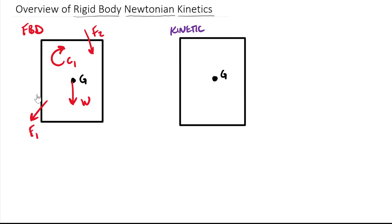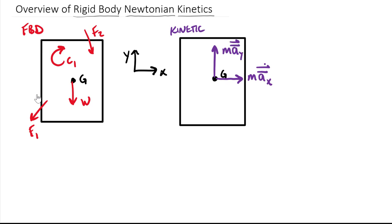The kinetic diagram is quite a bit simpler — it doesn't have as many terms. We focus on the acceleration of the centroid. We can write this as mass times the acceleration of the centroid. Using an XY coordinate system, I'll label this A sub X with a bar above it. The bar notation means 'of or about the centroid.' So this is the acceleration in the X direction of the centroid, and it is a vector. We also have mass times acceleration in the Y direction.